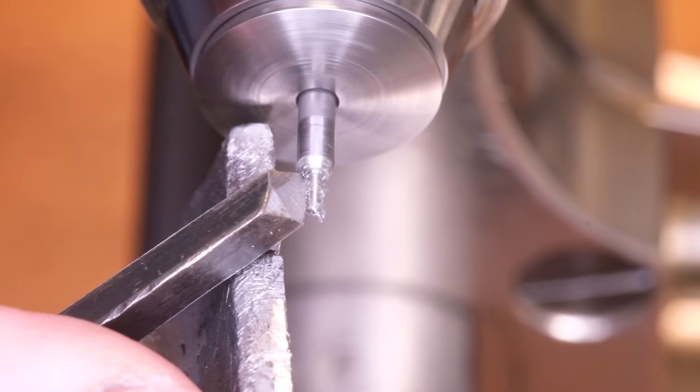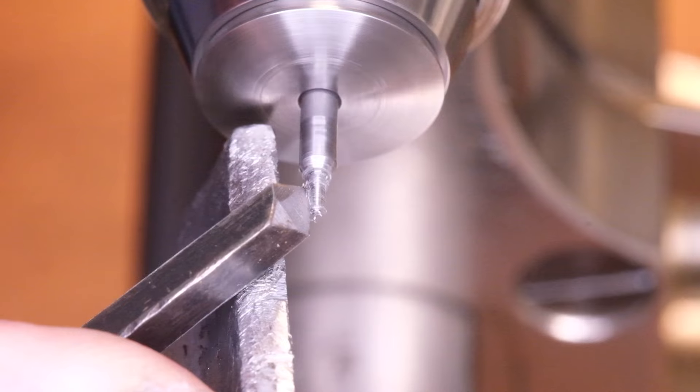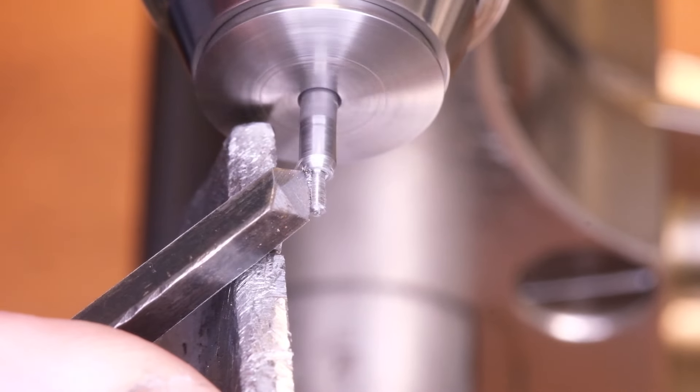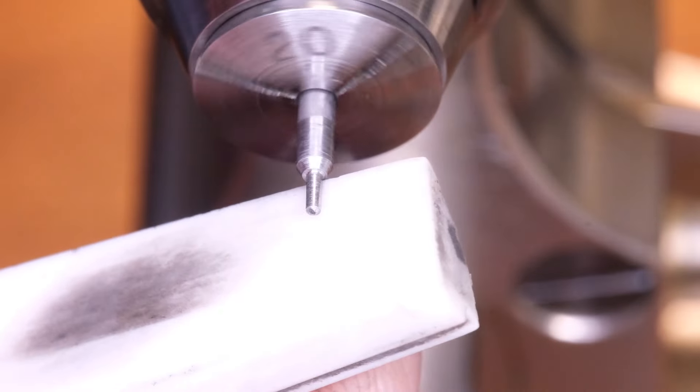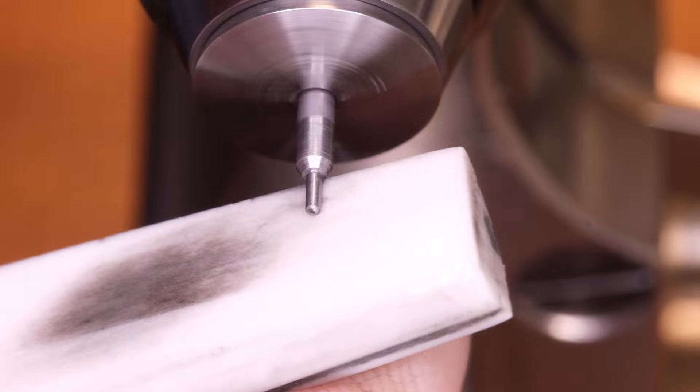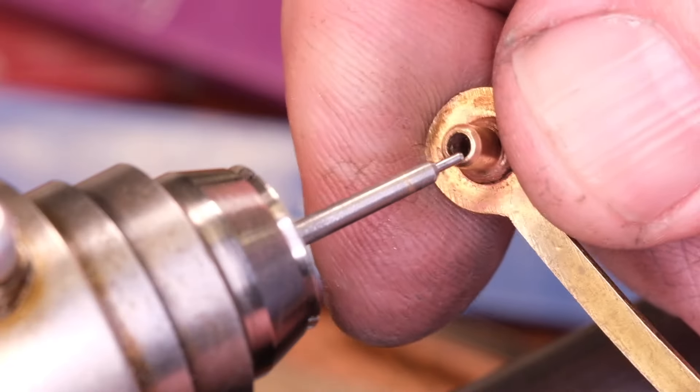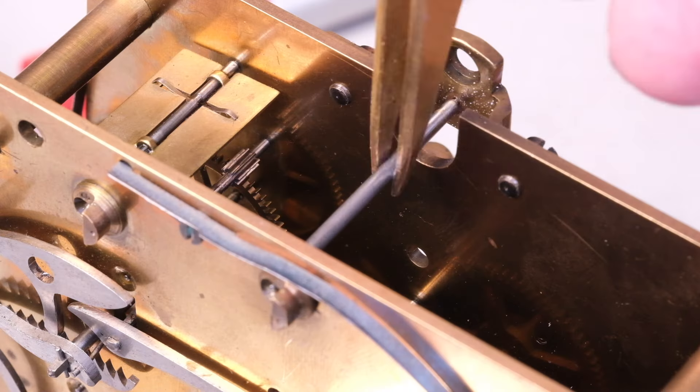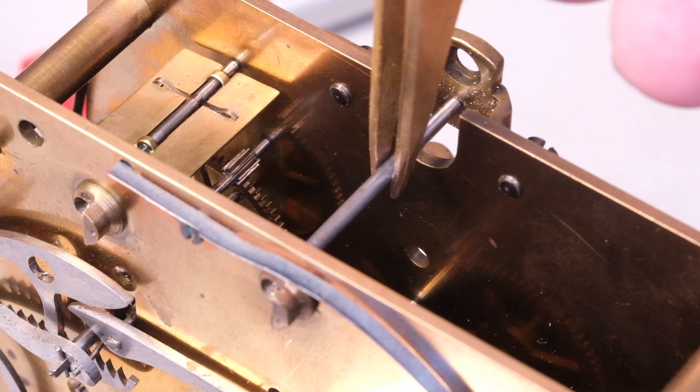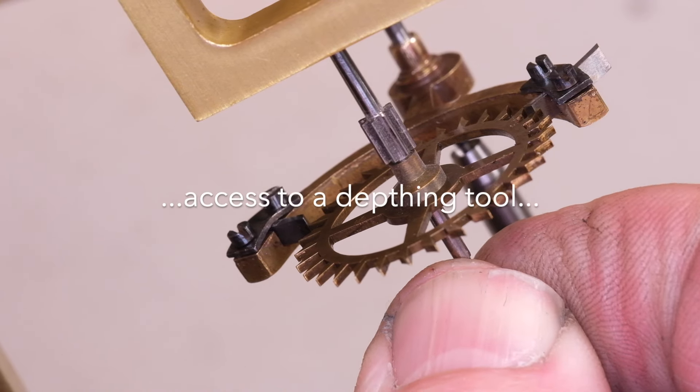And then I taper the arbor slightly for a good fit for the crutch. Once I've done that I flip it round and do the other end until we have a good amount of end shake.